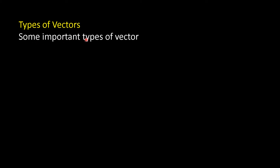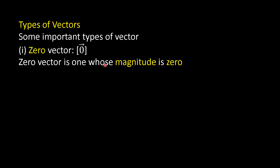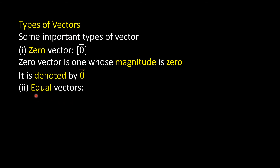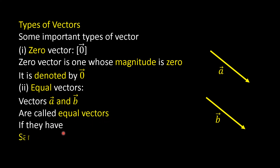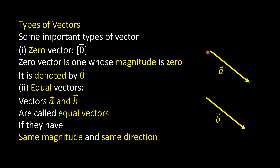In types of vectors, we will understand some important types. First, zero vector: a zero vector is one whose magnitude is zero, denoted by zero-bar. Second, equal vectors: vectors A-bar and B-bar are called equal vectors if they have the same magnitude and the same direction.